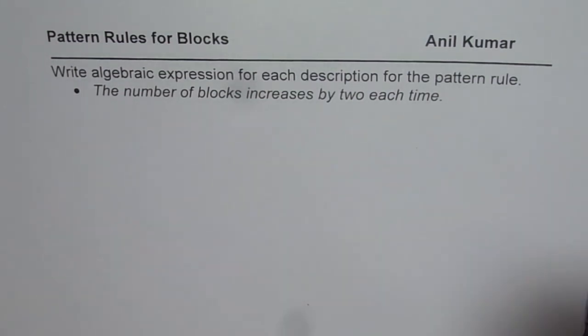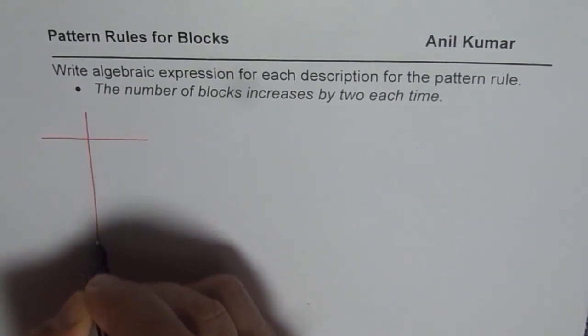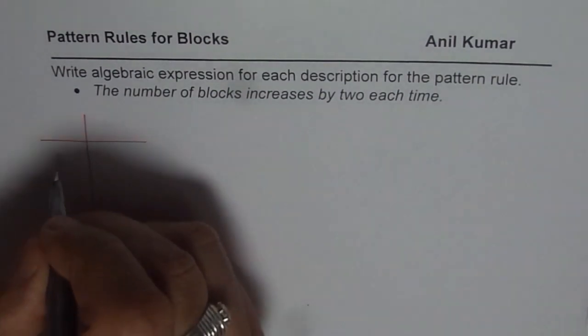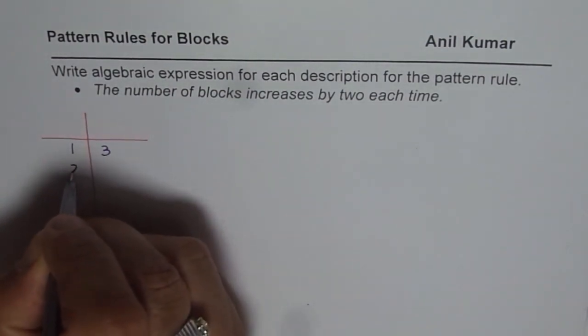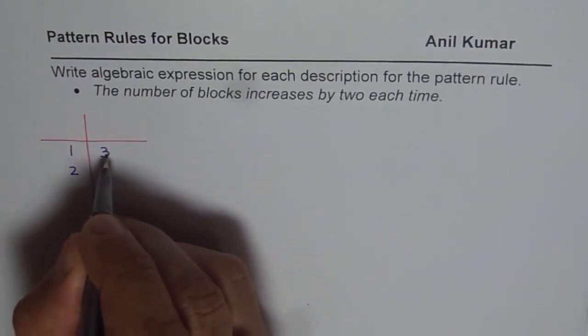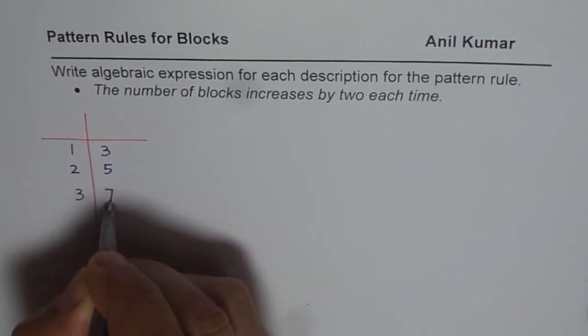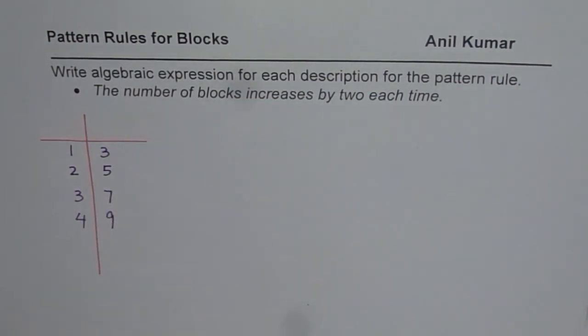For example, let me make a table to show you the result and then we will actually draw the blocks. So let us say we start with three blocks and then it increases by two, so we add two to it. Three plus two is five, and in the third pattern we will have seven, and in the fourth pattern we will have nine and so on.